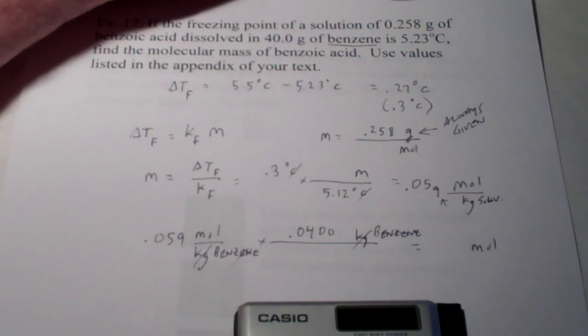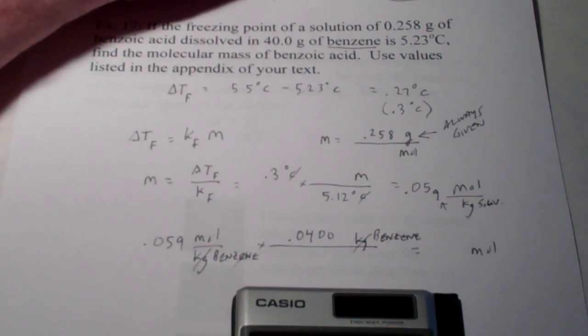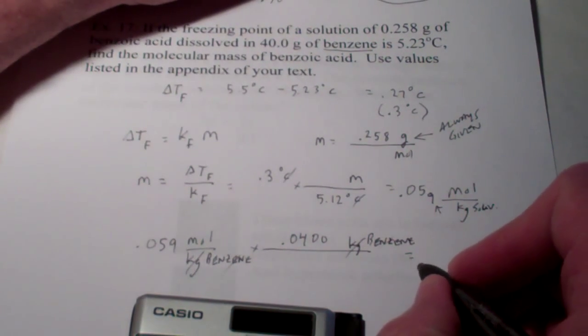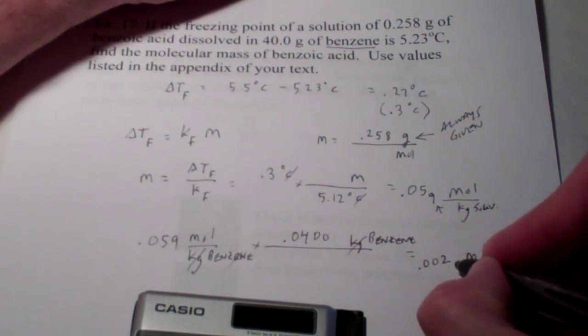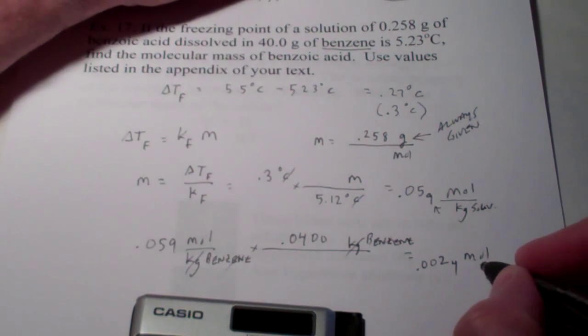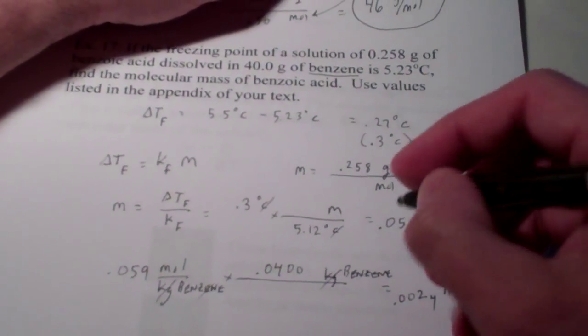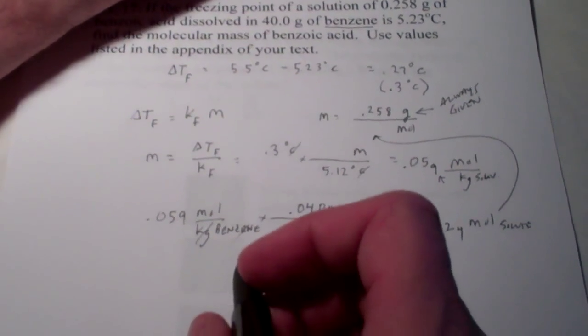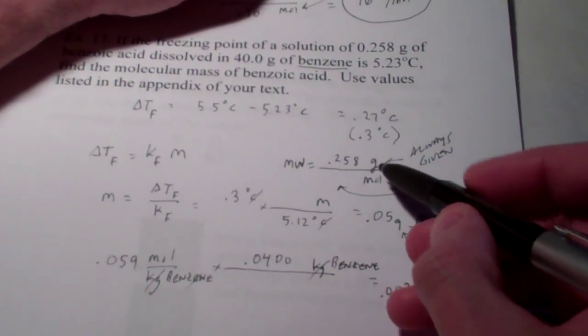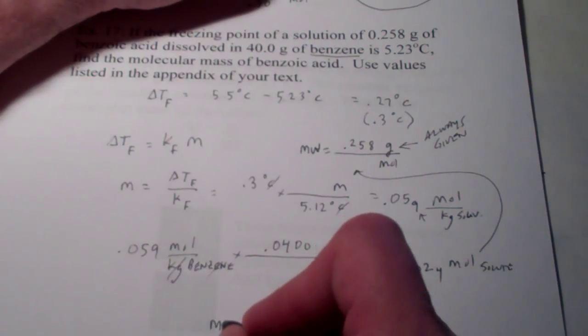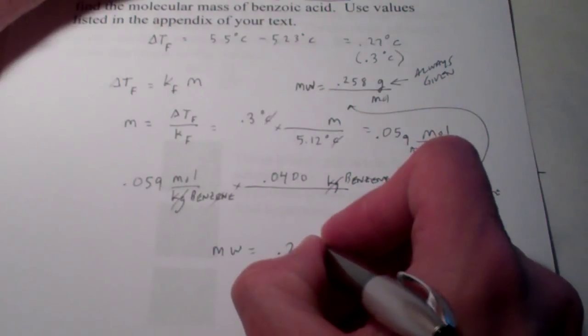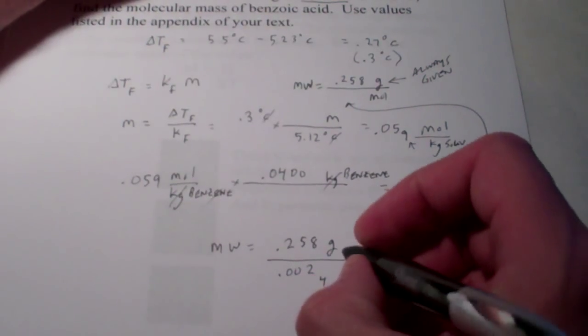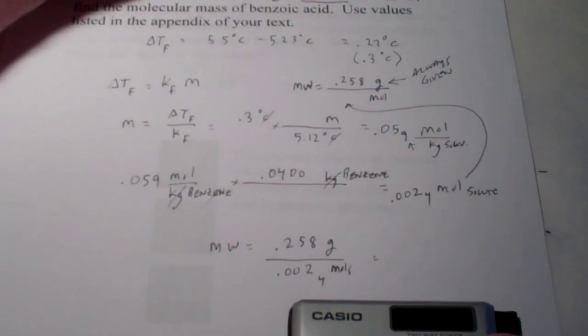So, let's take a look. We have our 0.059. We'll multiply that by 0.0400. And we end up with 0.0024 moles of solute here. Now, that's what we're going to put over here so we can find our molecular weight. Let's just clean it up a little bit and do it right here. Remember, molecular weight is grams per mole. So, let's just write that again down here so it looks a little prettier. We have 0.258 grams of solute divided by 0.0024 moles. We'll round this off to one significant figure when we're done.